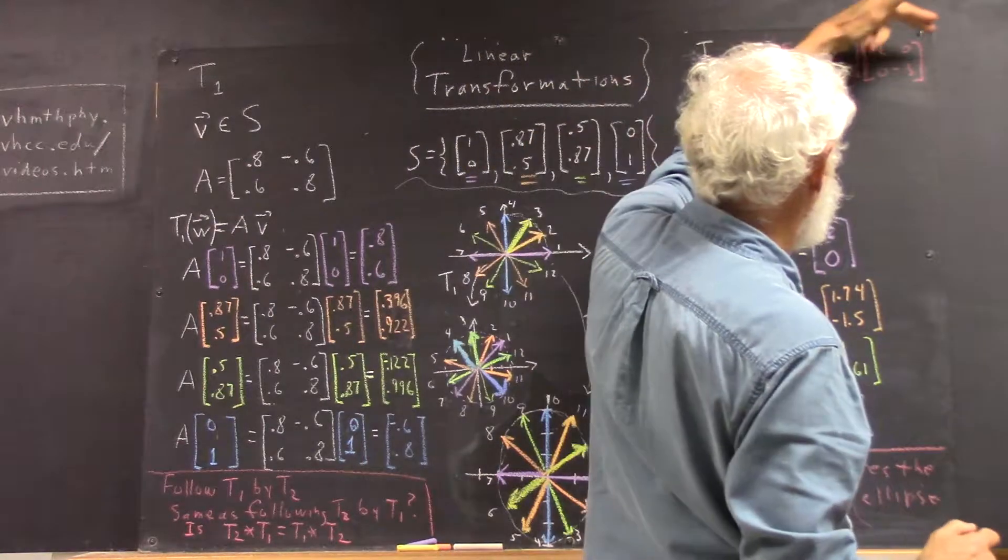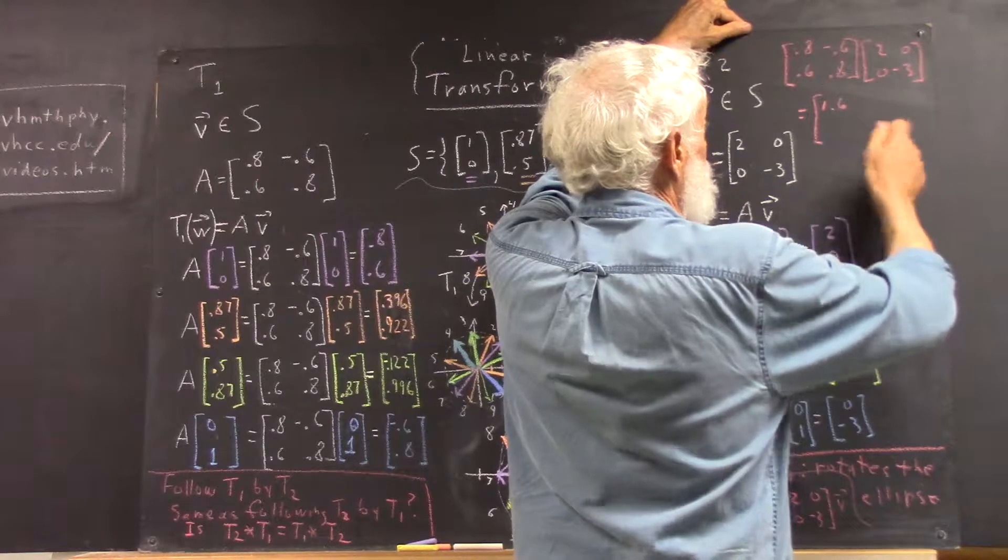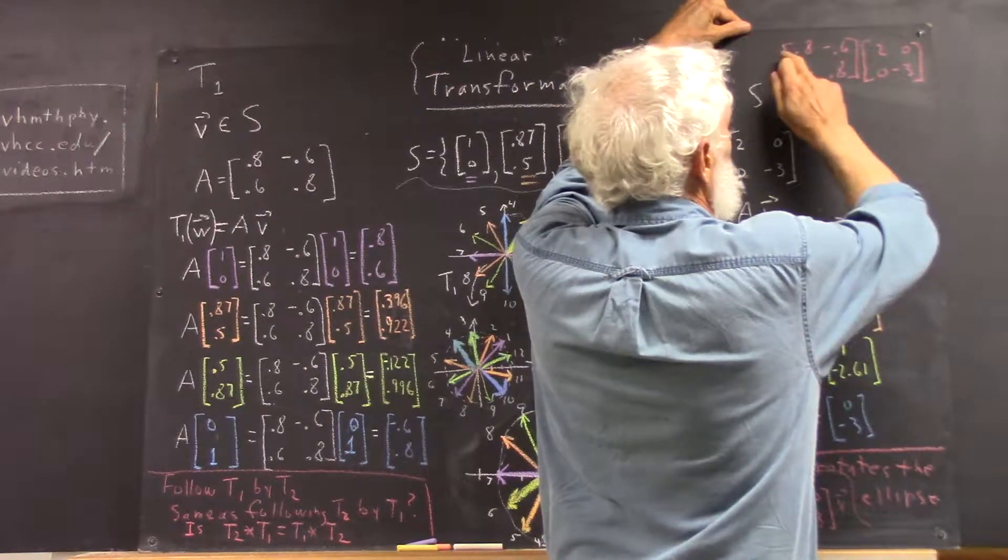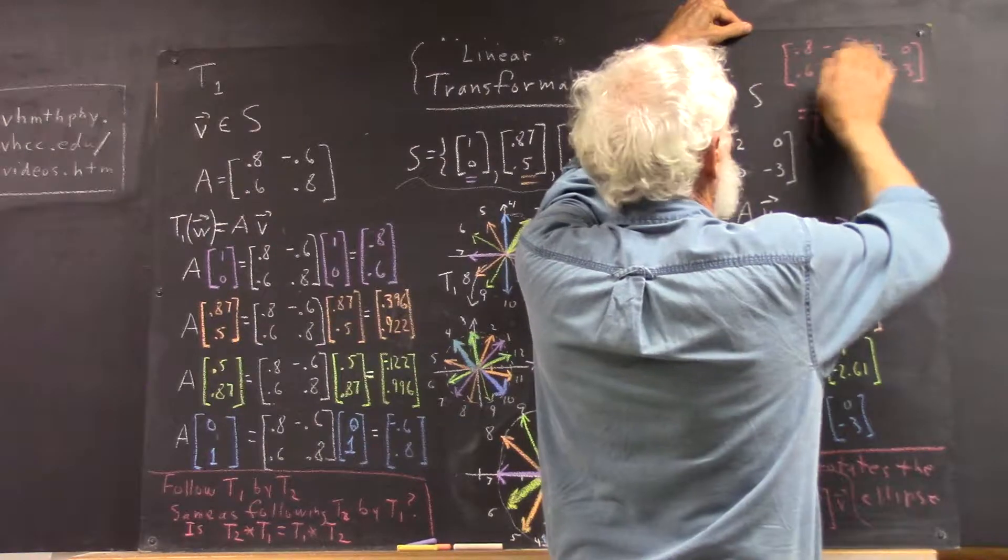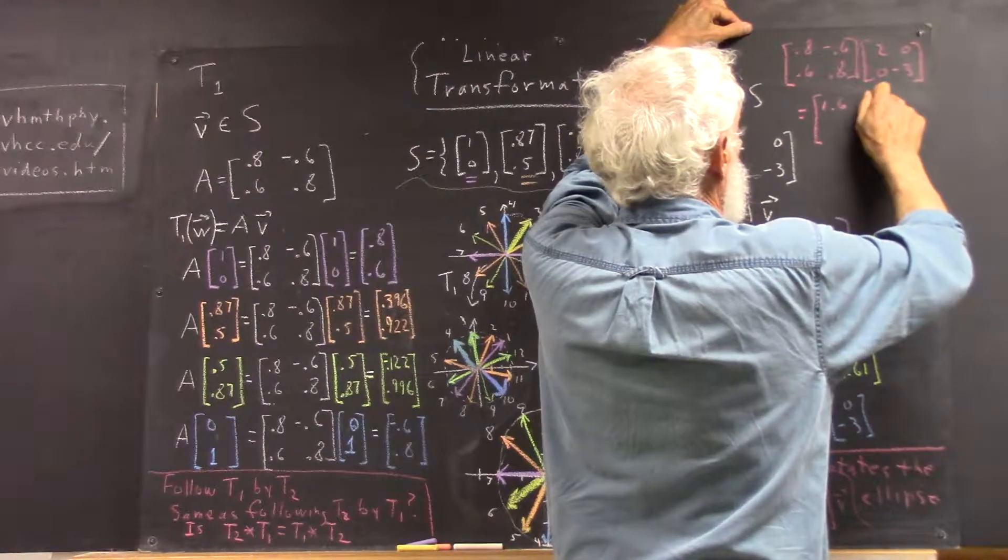Multiplying 0.8, negative 0.6 by 0, negative 3 is going to give us, multiplying the first row by the second column, we get 1.8.